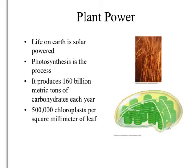The reason photosynthesis can produce so much is that in one square millimeter of leaf — and remember, a millimeter is the tiny little lines on our metric ruler — there are 500,000 chloroplasts. So imagine a whole tree's worth: that's a lot of chloroplasts that can convert a lot of solar energy into carbohydrates.